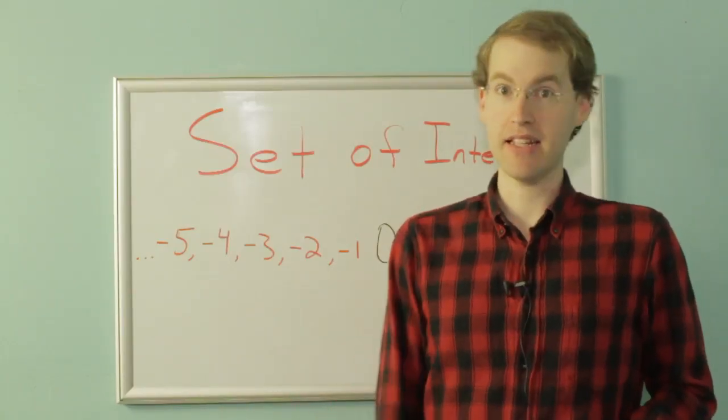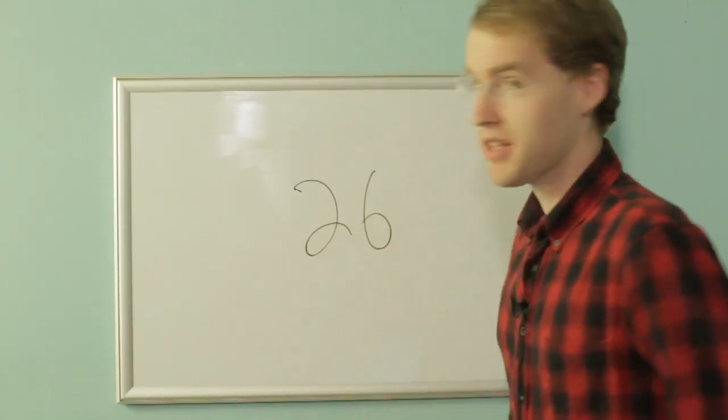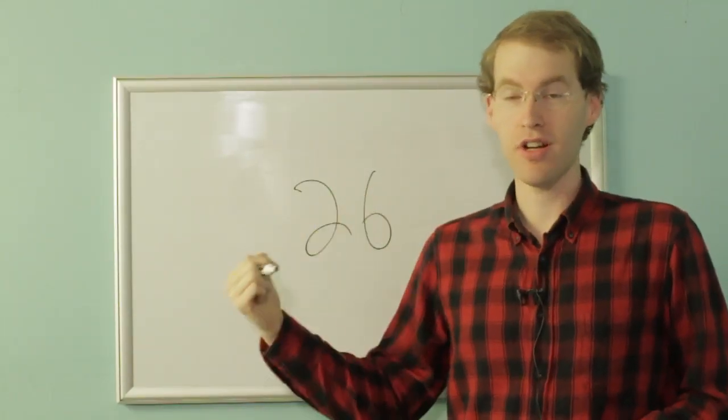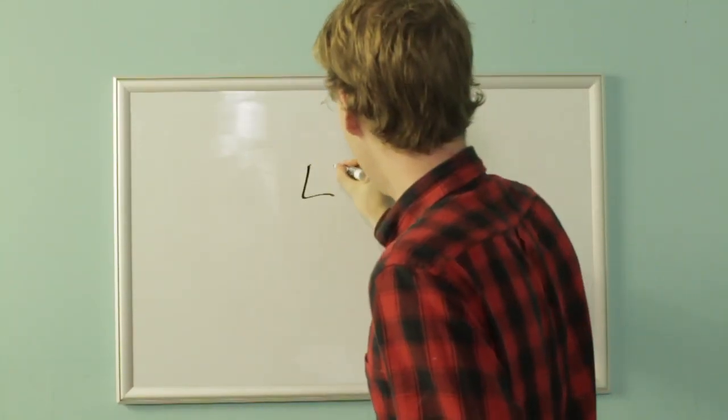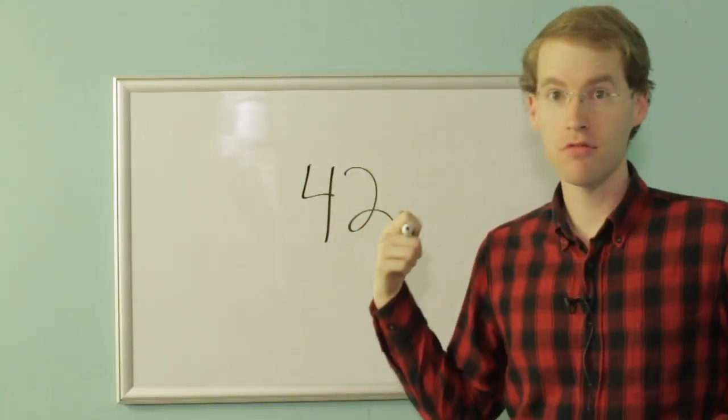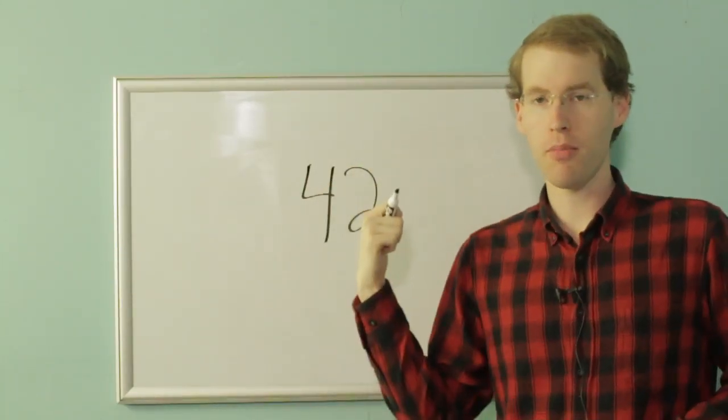Not an integer is anything that is not that. So that means 26, that's an integer. It's a whole number. 42, integer, whole number.